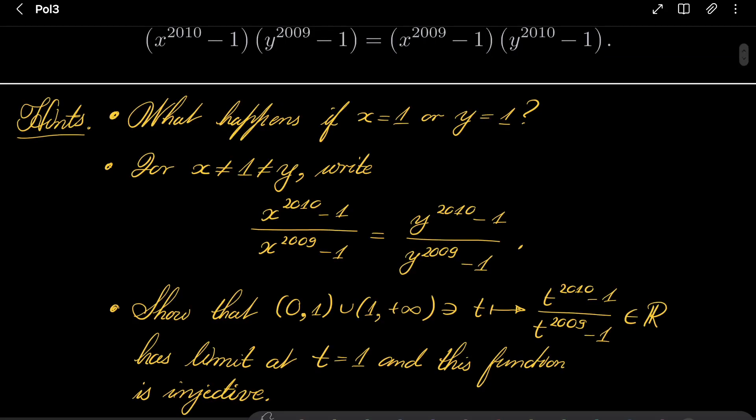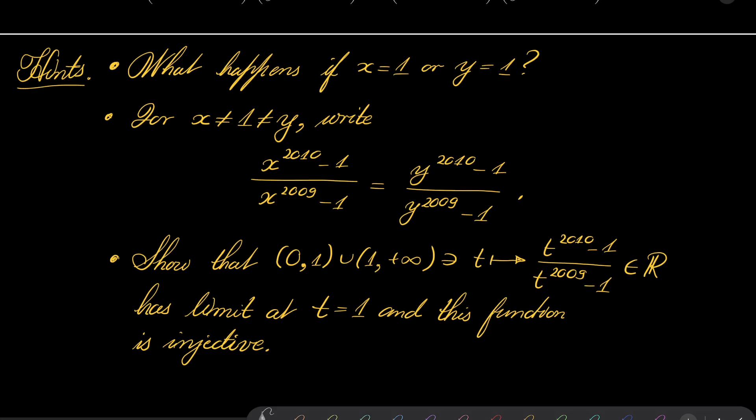Here are my hints for this problem. First, what happens if x equals 1 or if y equals 1? And for x which is not 1 and y which is also not 1, we can divide by x^2009 - 1 and consider this function which takes t and maps it to t^2010 - 1 over t^2009 - 1. Show that this function has limit at t equals 1 and is injective. Give this problem a try and I will see you in the last minute.